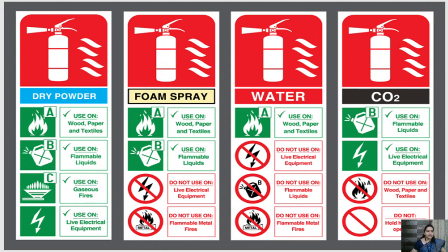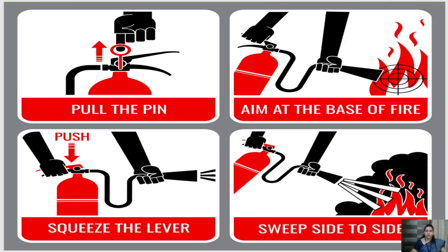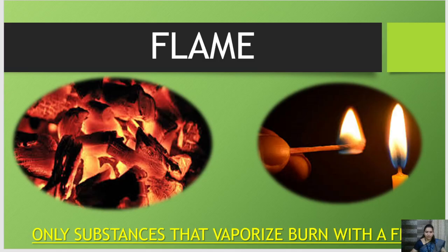The same procedure is followed for all extinguishers: pull the pin, aim at the base of the fire, squeeze the lever — this is the nozzle from where the gas comes out — and swipe side to side. This creates an envelope around the fire and cuts off the supply of oxygen.